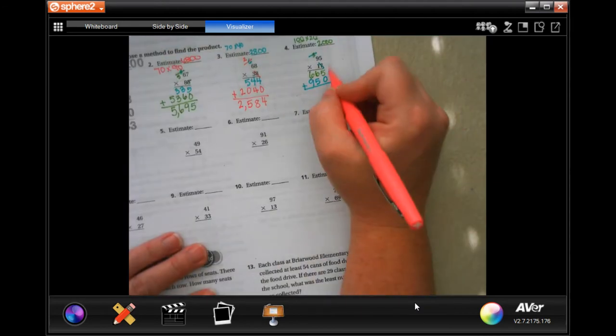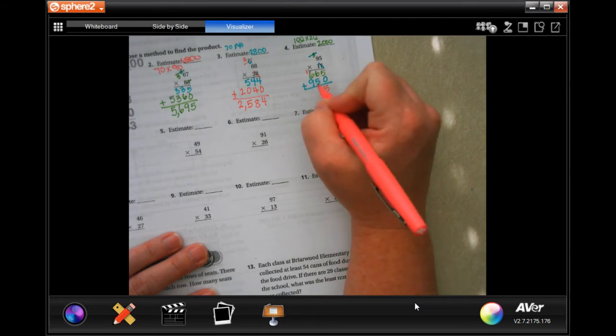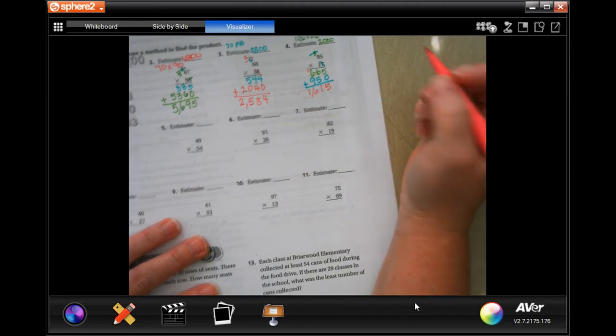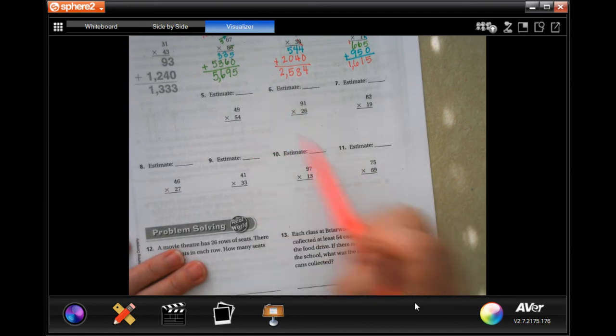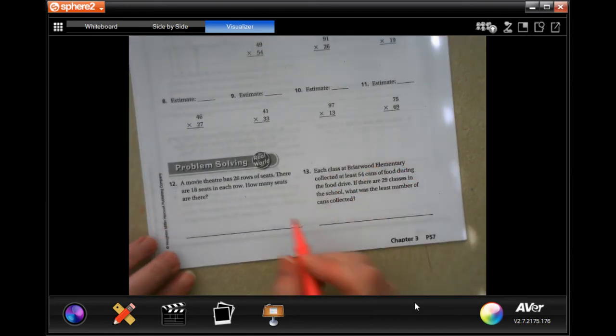So now, five plus zero is five. Six plus five is 11. Carry our one. One plus six is seven, plus nine is 16. 1,615. You guys are going to do five through 11. You totally can.